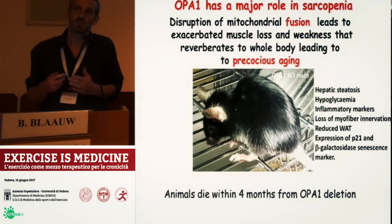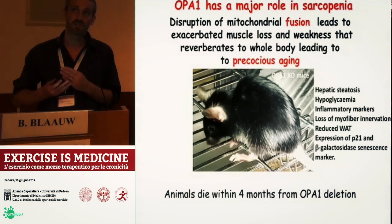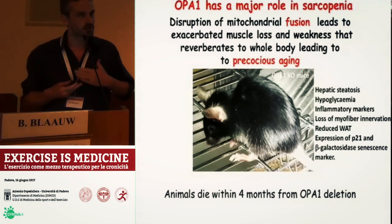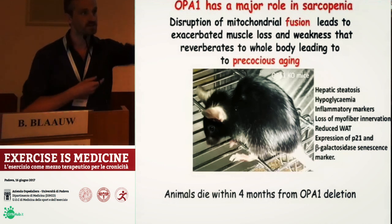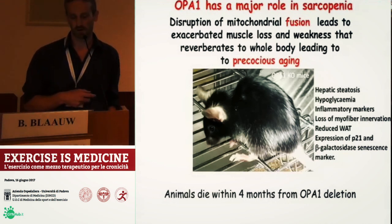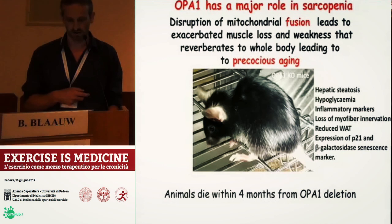Interestingly, these mice are actually dead within four months after deletion. This suggests to us that OPA1 in muscle, if you delete it, leads to an accelerated aging with a premature lethality.